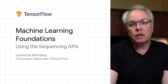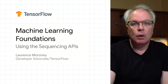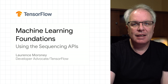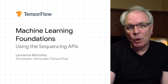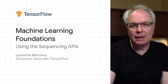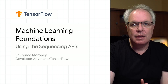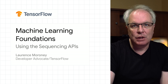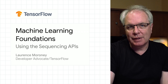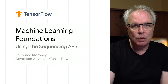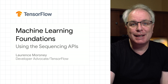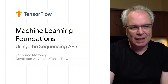Last time, in our introduction to natural language processing, we looked at how you can tokenize words with simple APIs. This allowed you to turn words into numbers or tokens so that they can be more easily represented in a computer's memory. It's the first step in processing language. The next step, which we'll look at in this video, is to turn sentences into sequences of tokens. And we'll explore the tools that make this very simple to do in TensorFlow. So let's get started.